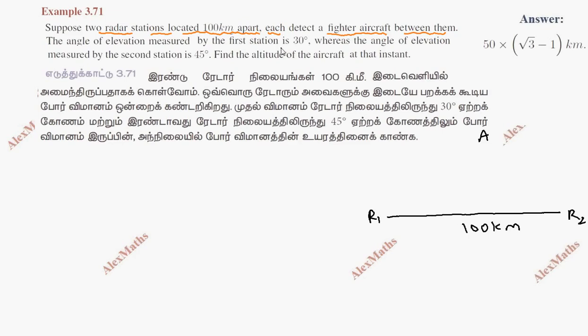The angle of elevation measured by the first station is 30 degrees, so here it is 30 degrees. The angle of elevation measured by the second station is 45 degrees, so here it is 45.